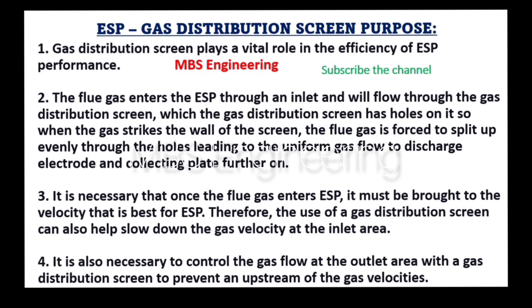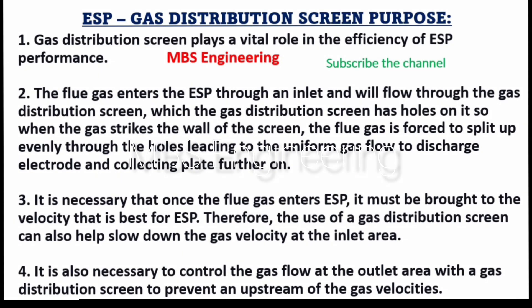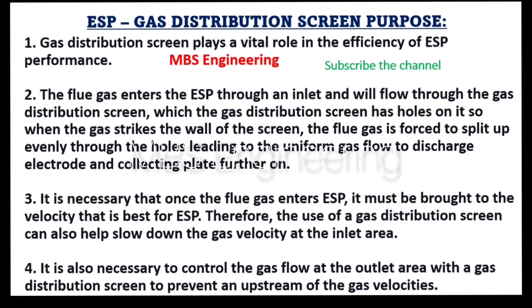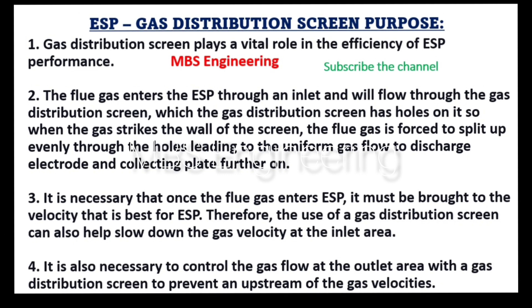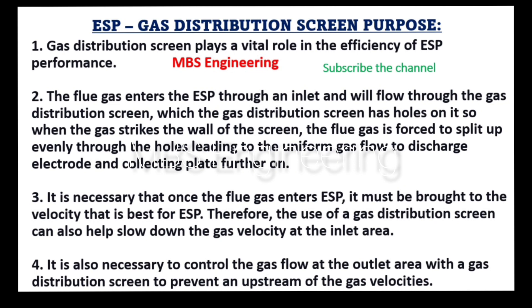Point 3: It is necessary that once the flue gas enters the ESP, it must be brought to the velocity that is best for ESP. Therefore, the use of a gas distribution screen can also help slow down the gas velocity at the inlet area. Point 4: It is also necessary to control the gas flow at the outlet area with a gas distribution screen to prevent upstream of the gas velocities.